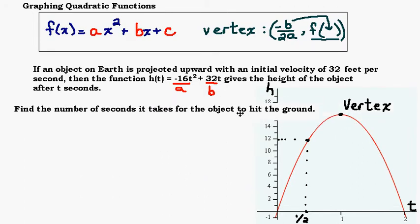Find the number of seconds it takes for the object to hit the ground. Well, we can see from the graph, it looks like 2 seconds. At 0 seconds, the object is on the ground, so at 0 seconds, it has a height of 0. And we know after 1 second, it has a height of 16.